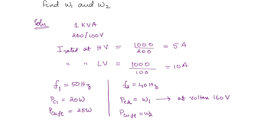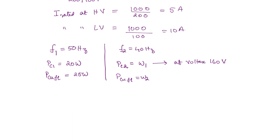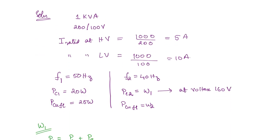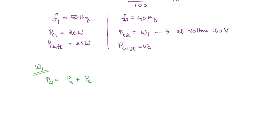We have to find W1 and W2. Starting with W1, the core losses: P_core = hysteresis loss + eddy current loss. Since it is assumed that no load loss components are equally divided, hysteresis and eddy current losses are equal. So P_H1 = P_E1 = P_C1 / 2 = 10 watts.